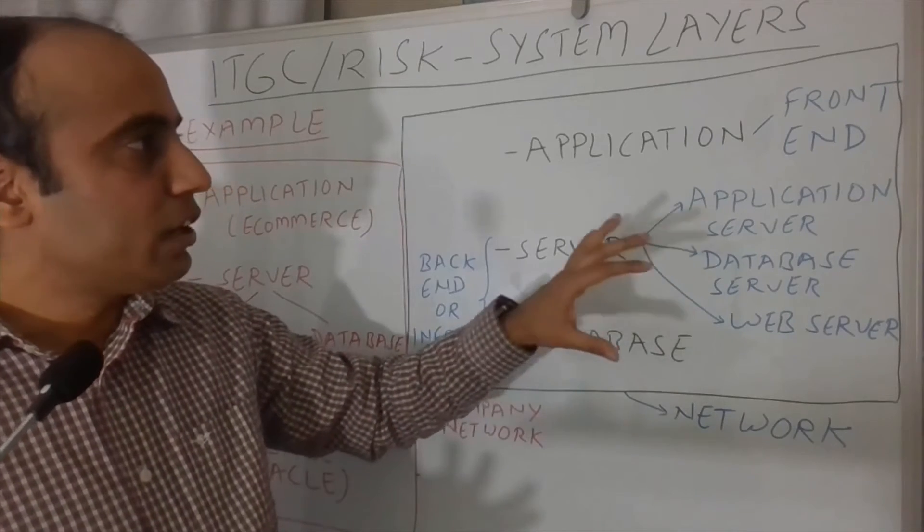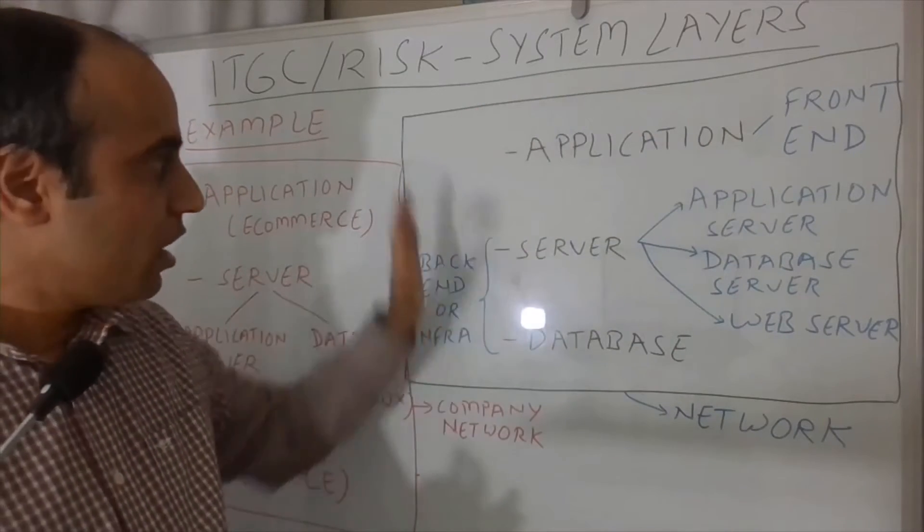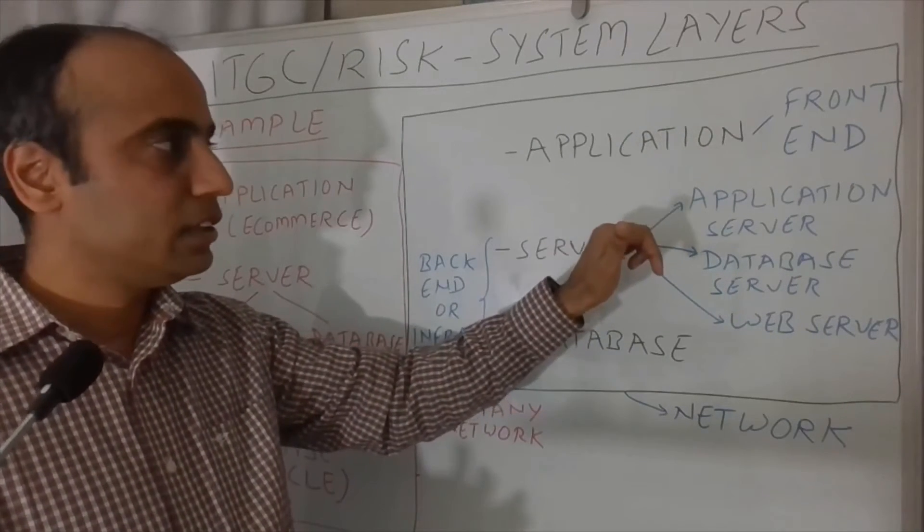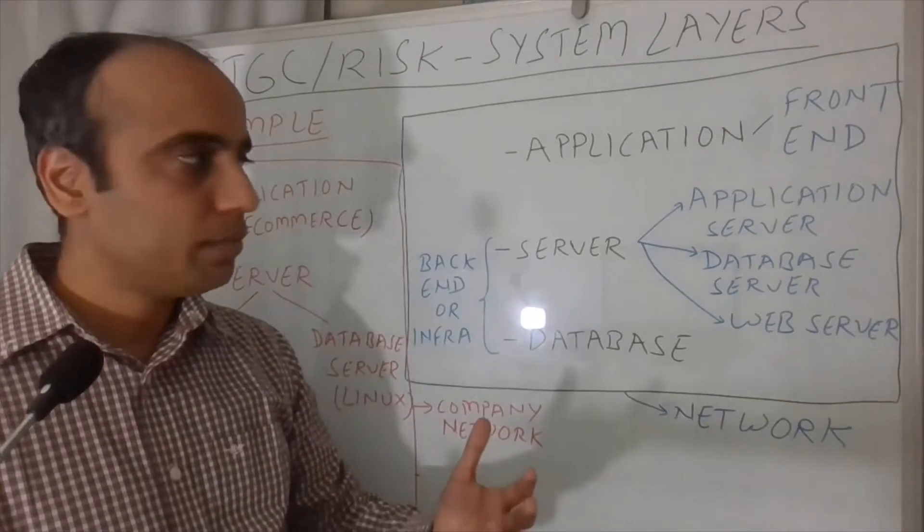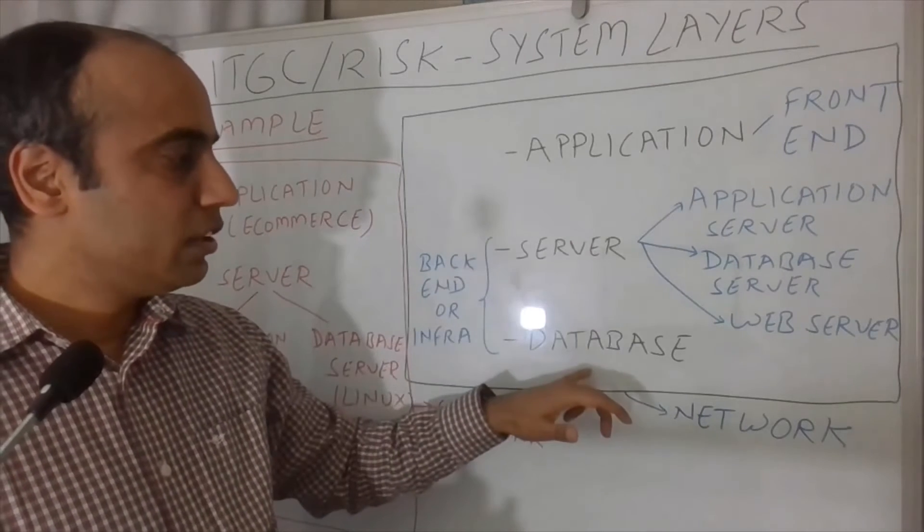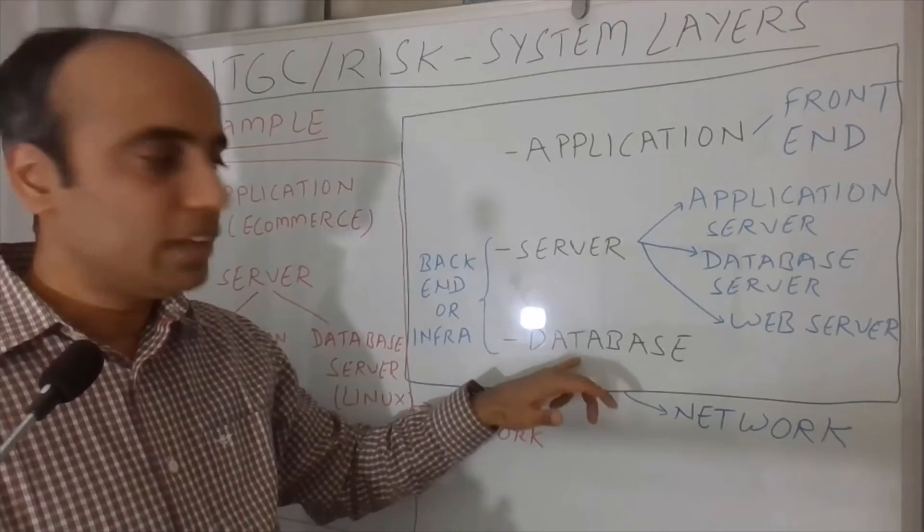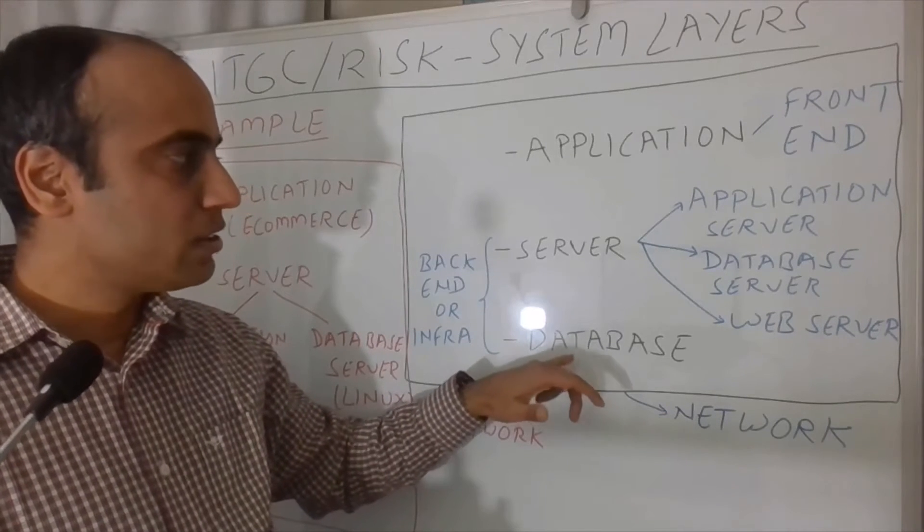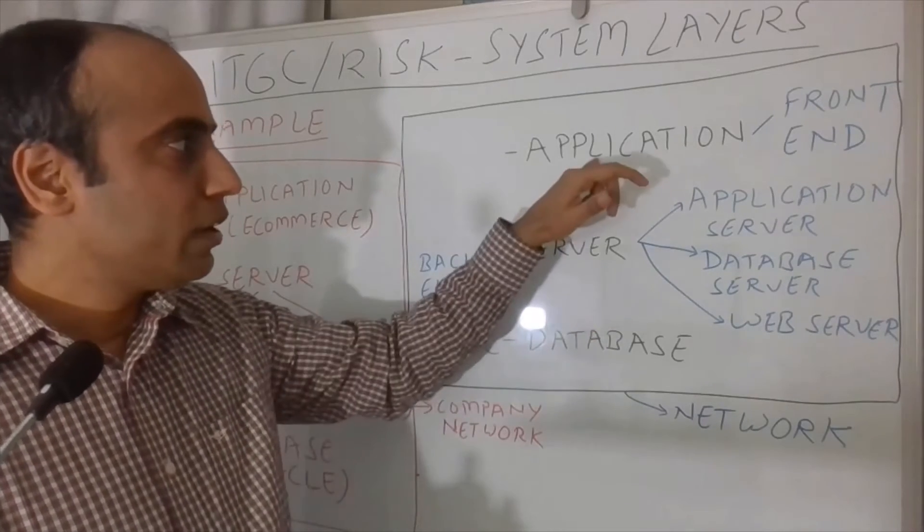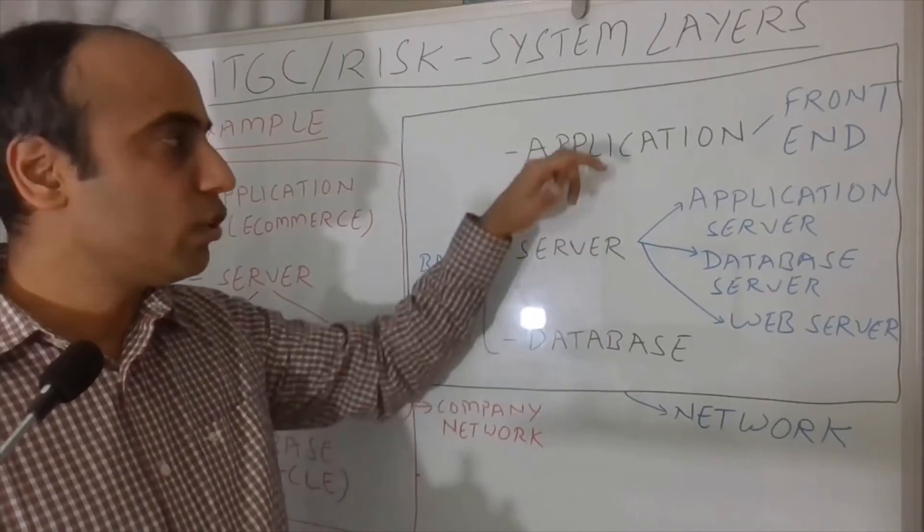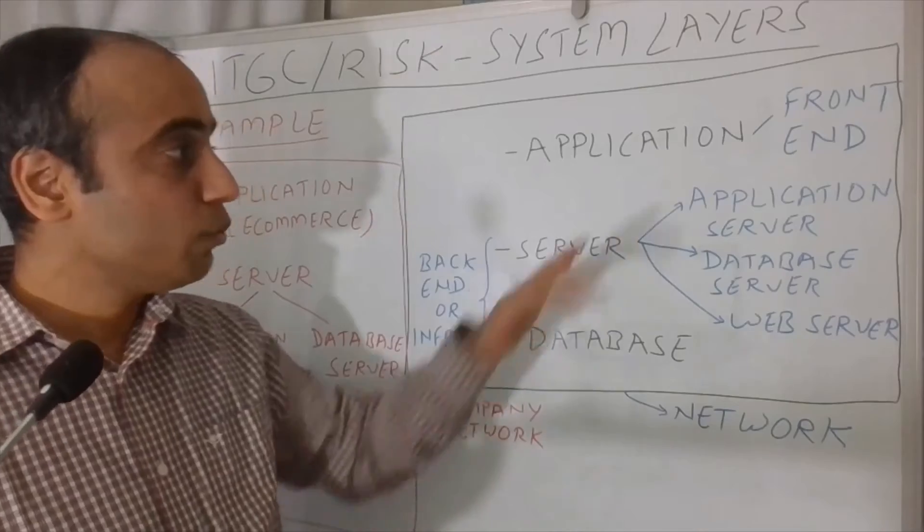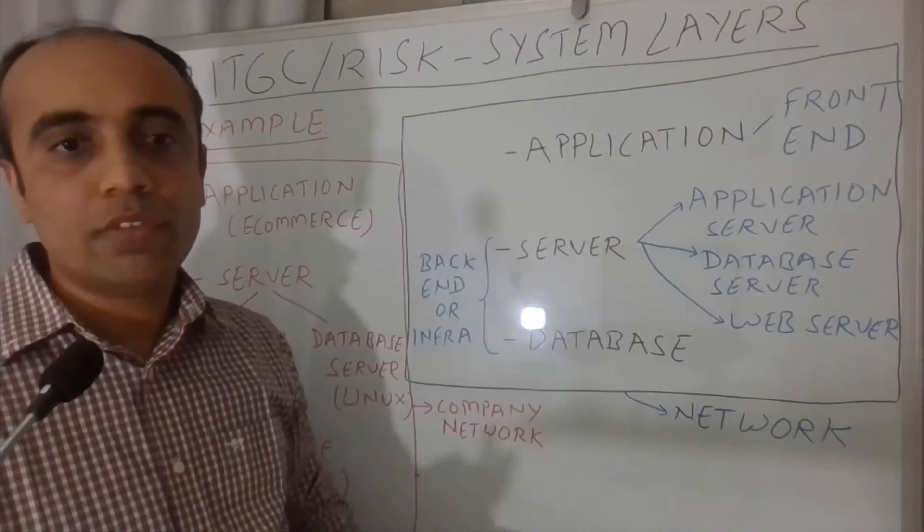Now, one thing we have understood from this part side of the screen is application, a basic front end through which you can interact on the screen. The data which is getting fetched on the screen gets fetched from the database layer. That's where the data resides. And database requires a server where it gets hosted. So this is the whole correlation between the three layers. So there is a lot of interdependency. That's the reason when you put a risk lens, we look at all the three layers which constitute a system.